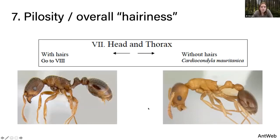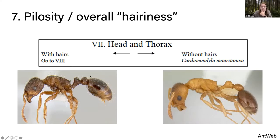Number seven is the overall hairiness of the ant. Looking at the head and thorax, does it have a lot of hairs or very few? On the left is a Tetramorium, and on the right is Cardiocondyla. All ants have some hairs on them, but it's pretty evident which ones count as hairy.